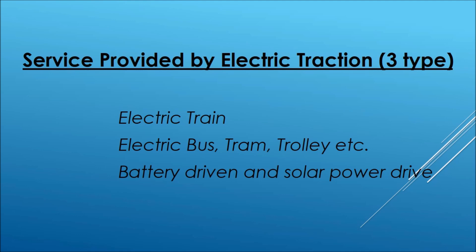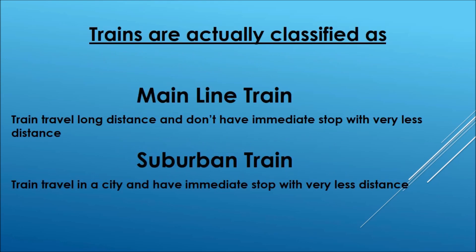Trolleys are similar to trams but carry goods in mines or industries. Solar-powered devices are roof-mounted — if solar panels are installed over the roof of an electric bus, those panels charge when there is sunlight, and the battery stores the charge to drive the motors. These are called battery-driven and solar-powered devices.